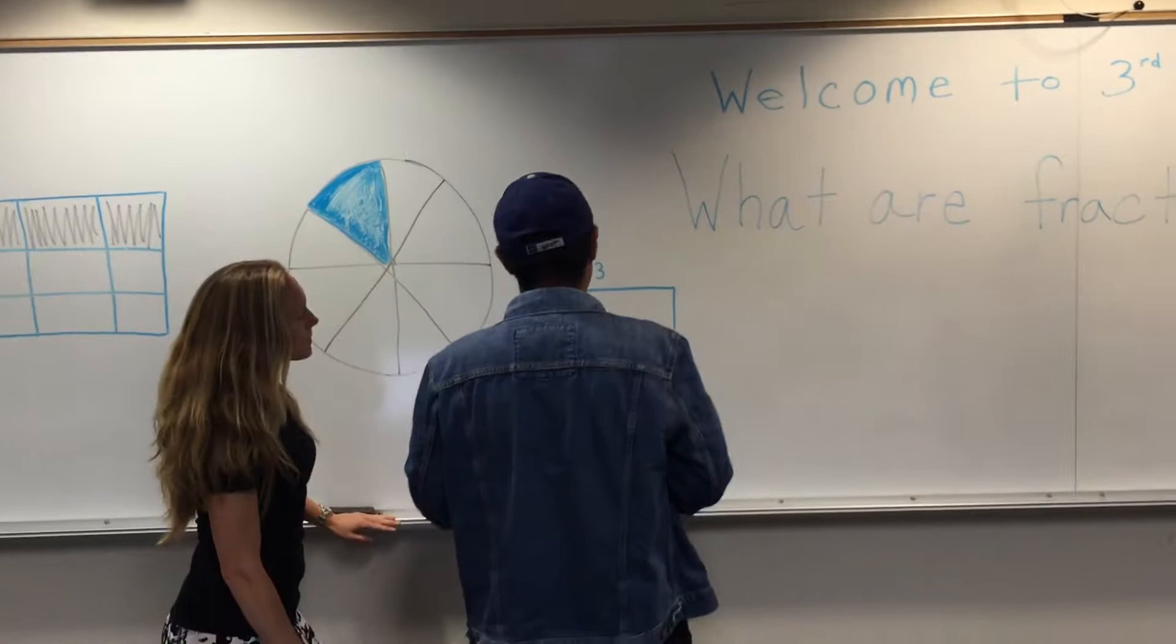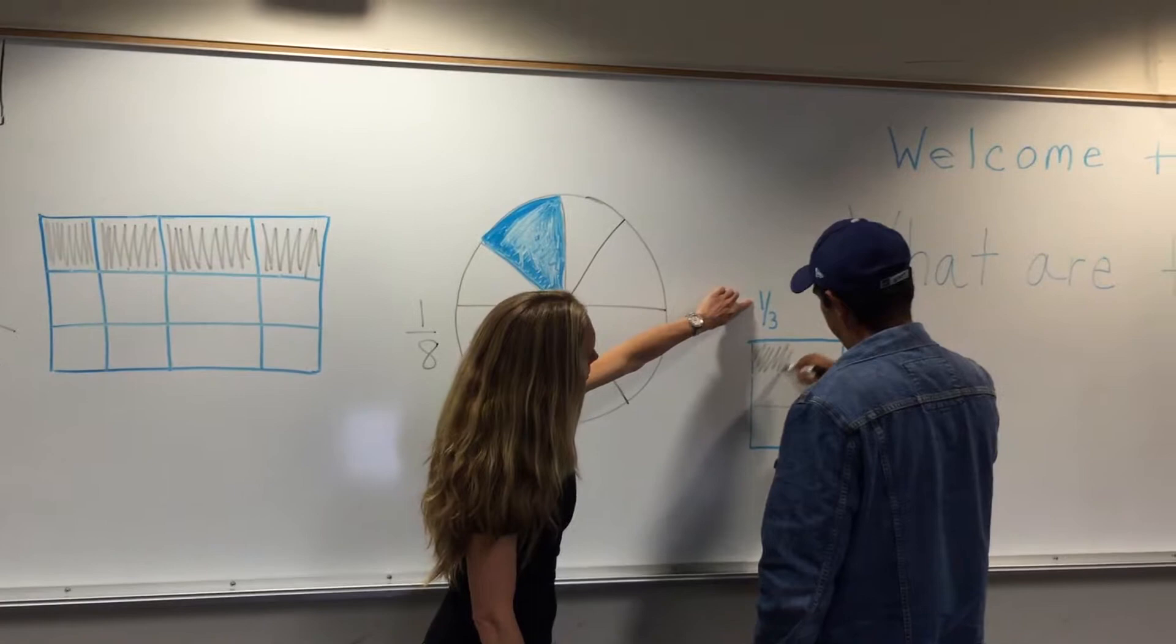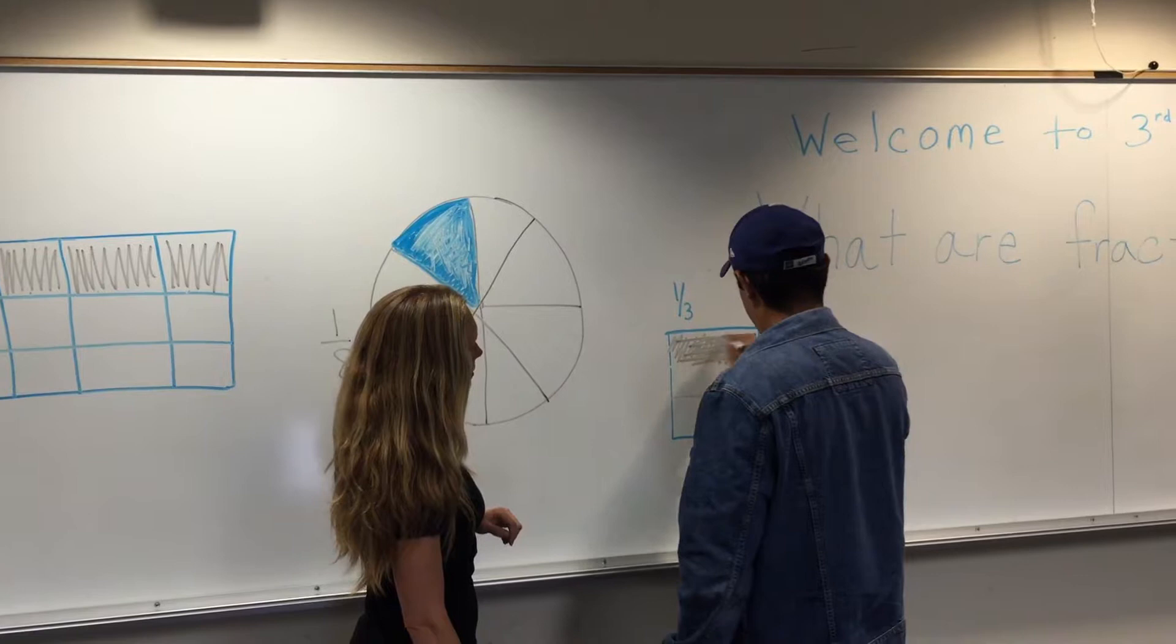And then shade in one part of the third. One is our numerator. So we are just going to shade in one part. Awesome.